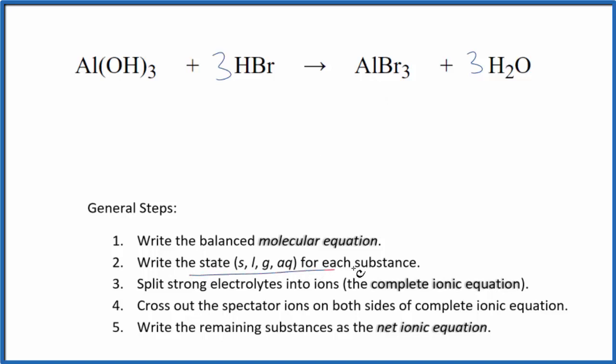Next we write the state for each substance. Hydroxides in general, unless they're in group 1, they are only slightly soluble and if they're slightly soluble we say they're insoluble for net ionic equations and we write S because that means they're a solid, they don't dissolve.